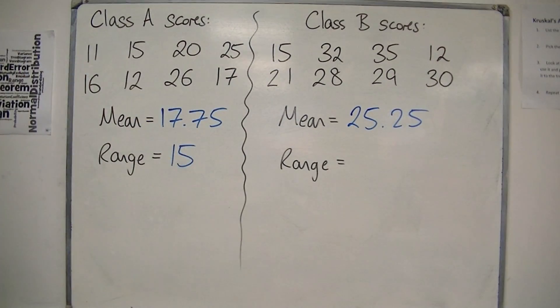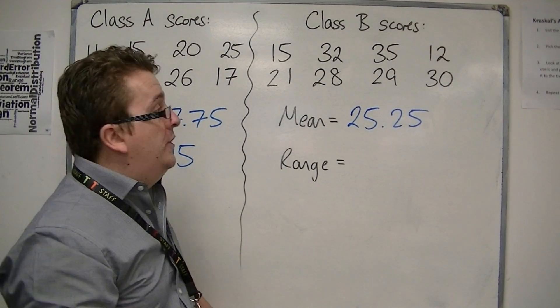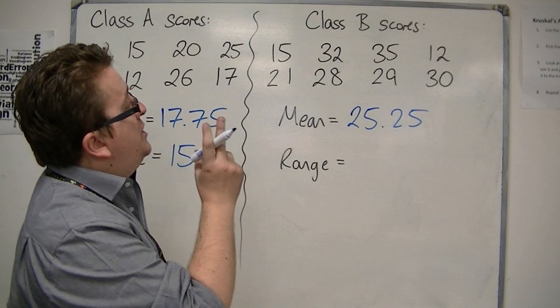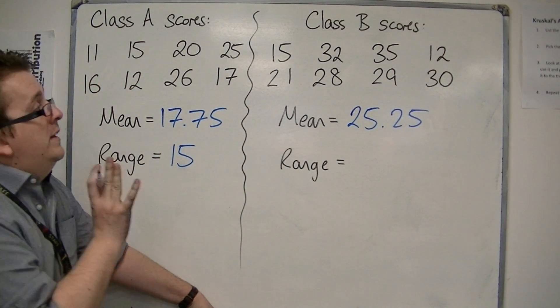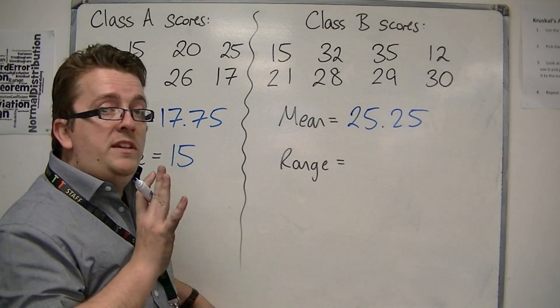The range is the largest, which is 35, take away the smallest, which is 12, so 35 take away 12 is 23.